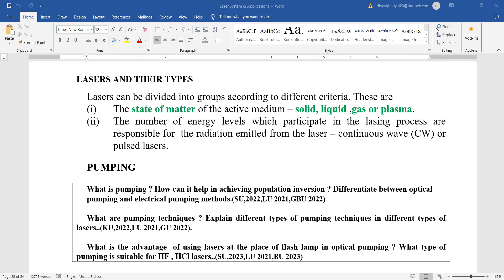Lasers can be divided into groups according to the different criteria of their active medium. That means they can be solid, liquid, gaseous or plasma, and they can be continuous wave lasers like gaseous lasers, helium neon, or pulsed wave like ruby laser.